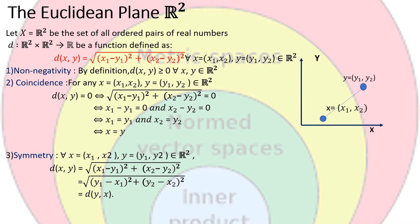The next property is symmetry. For all x equals (x1, x2) and y equals (y1, y2) in R2, d(x,y) equals the square root of (x1 minus y1) squared plus (x2 minus y2) squared. On interchanging x1 and y1, it will not impact the square, so we get the square root of (y1 minus x1) squared plus (y2 minus x2) squared, which equals d(y,x). So symmetry is also satisfied.